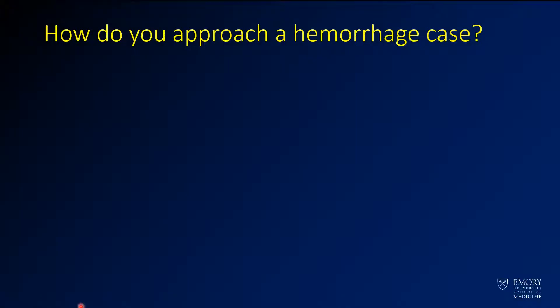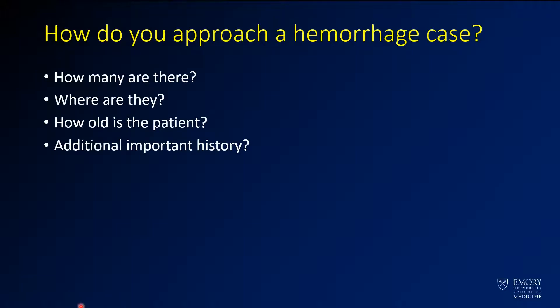In this section we're going to talk about a strategic approach to a hemorrhage case. When strategically approaching a hemorrhage case, you need to think about these major questions: how many hemorrhages are there, what is the distribution of the hemorrhages and where are they located, how old is the patient, and are there any additional mitigating factors that you need to think about?